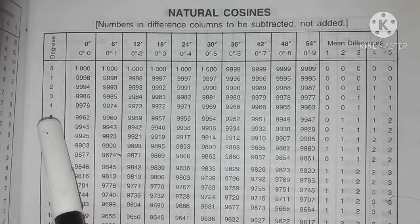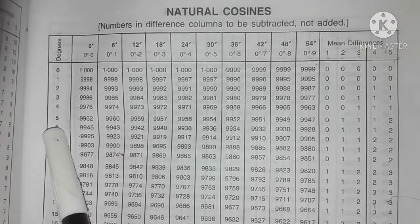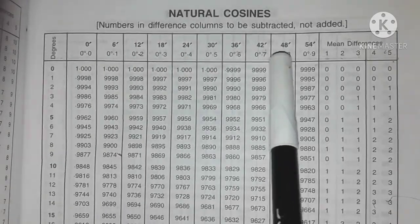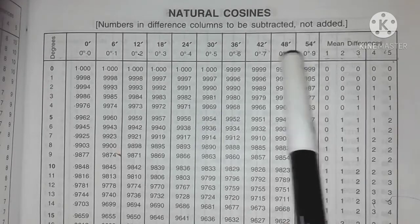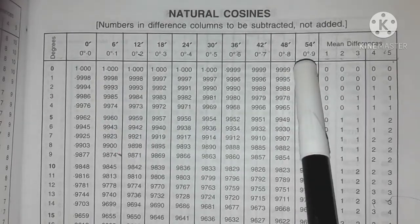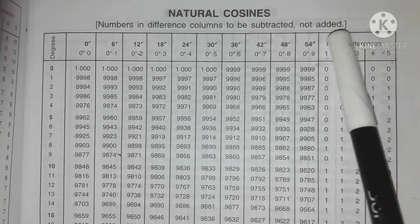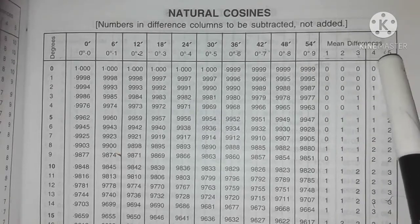The leftmost column has all angles from 0 to 90 degrees, whereas these columns that you see here are the minutes of the angle from 0 to 54 minutes. This is the main differences column, we will come to this very soon.